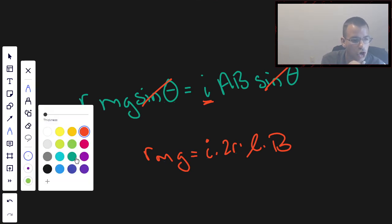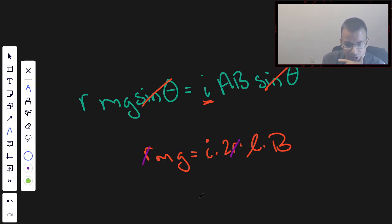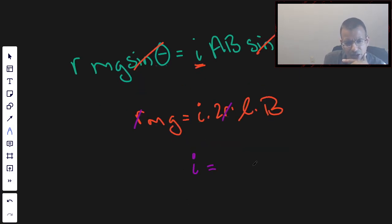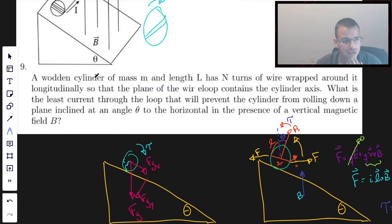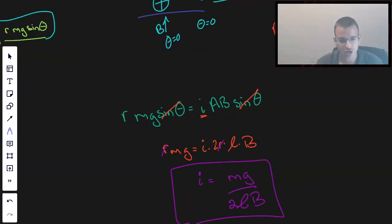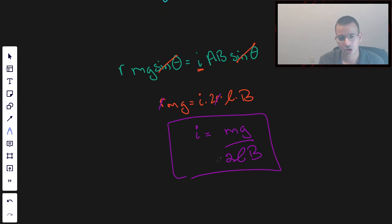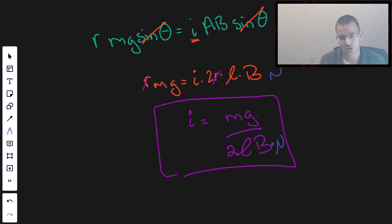So I equals mass times gravity over 2 length times magnetic field. So let's take a look make sure we got most of what we need. Wooden cylinder, N turns, totally forgot that. So over here this is for one turn so we're going to multiply the bottom by N because I should have had an N up here. The more loops we have effectively the more area, the more loops we have the more total area we're going to have for the torque to act on. So I just forgot the N there. Current equals mg over 2LB times N. Hope that helped.